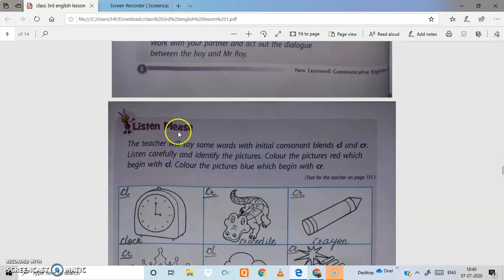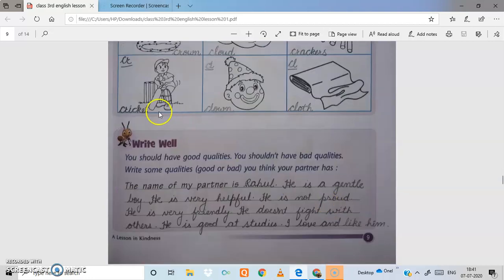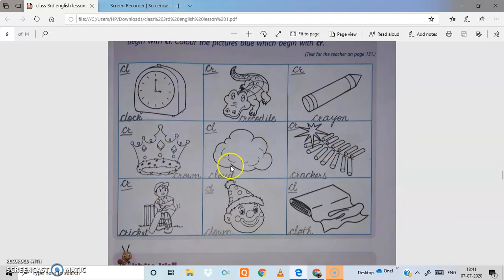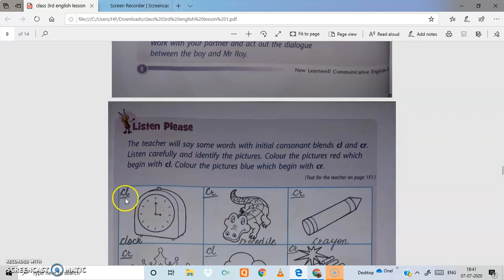Okay, next take the question, listen please. The teacher will say some words with initial consonant blends CL and CR. I will explain - this is clock, CL, CL blend. Write CL and write down the name of object, clock.